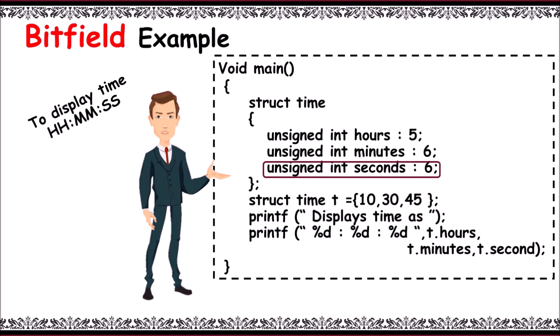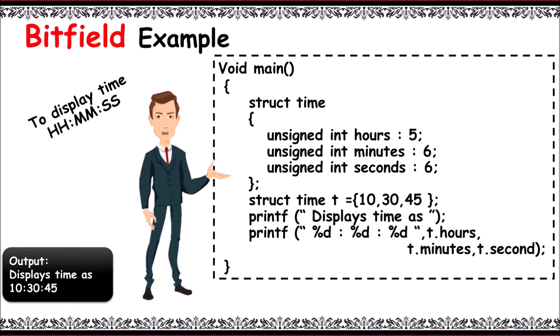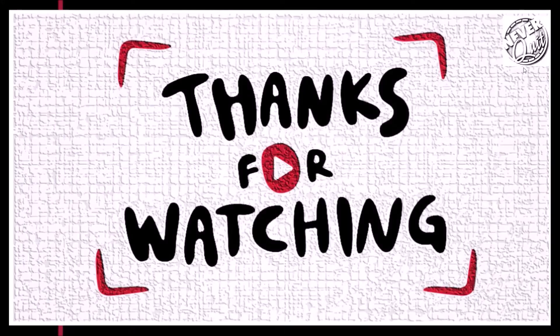Then next, assign values normally, that is struct time t equals 10, 30, 45. Then it displays the time as shown in the printf like t dot hours, t dot minutes, t dot seconds, and the output is displayed as 10 hours, 30 minutes, 45 seconds. Thanks for watching.